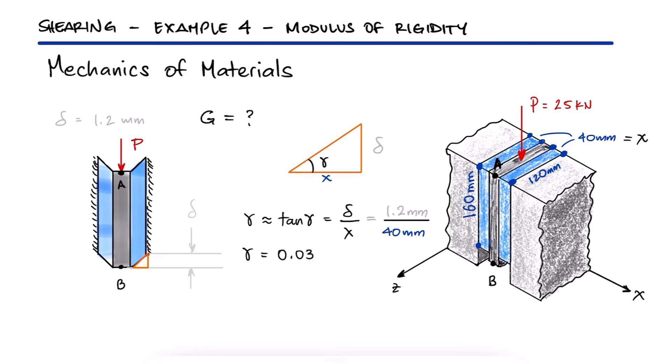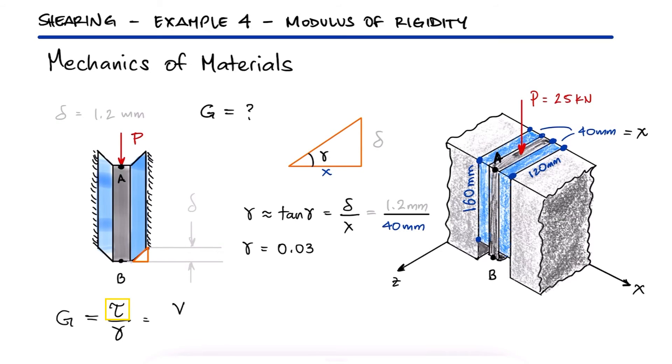Since the modulus of rigidity is defined as the shearing stress over the shear strain gamma, all we need to do is calculate that shearing stress as the load over the area that is parallel to that load.